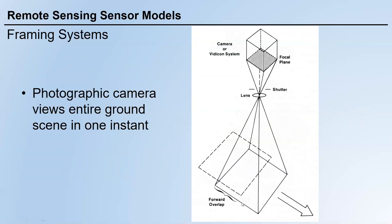The whole square area on the ground is covered by each image. The shutter opens and closes, then we have a whole image. When the sensor moves forward, you can adjust the speed — the frequency of opening and closing of the shutter — to get multiple images. This is straightforward to understand.